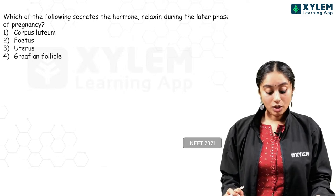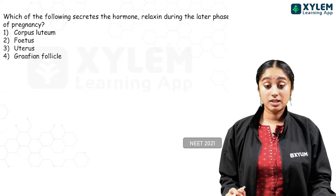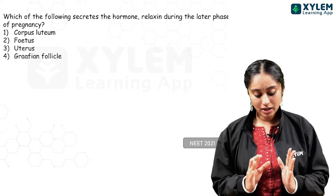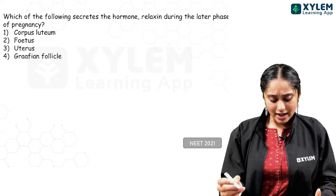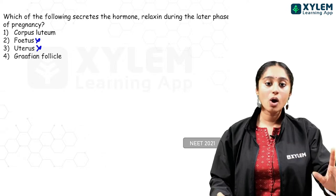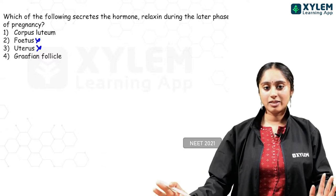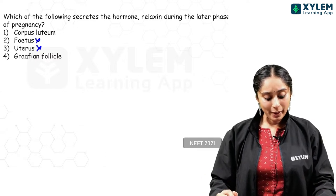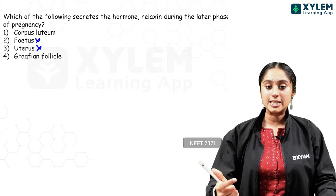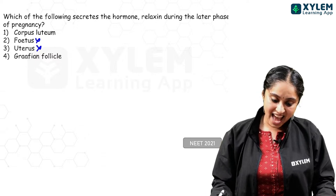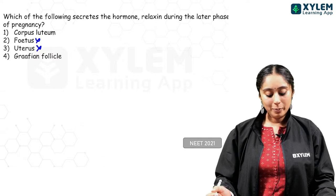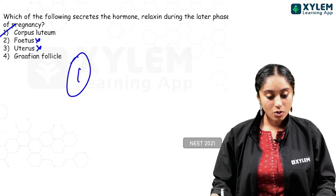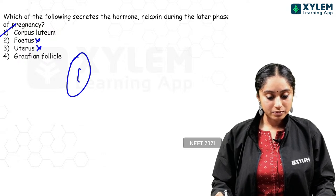NEET 2021: which of the following secretes the hormone relaxin during the later phase of pregnancy? It is not the fetus, not the uterus — it is from the ovary. NCERT states relaxin is produced by the ovary. After ovulation, the Graafian follicle becomes the corpus luteum — so it is the corpus luteum that produces relaxin. Option 1 is the right answer.